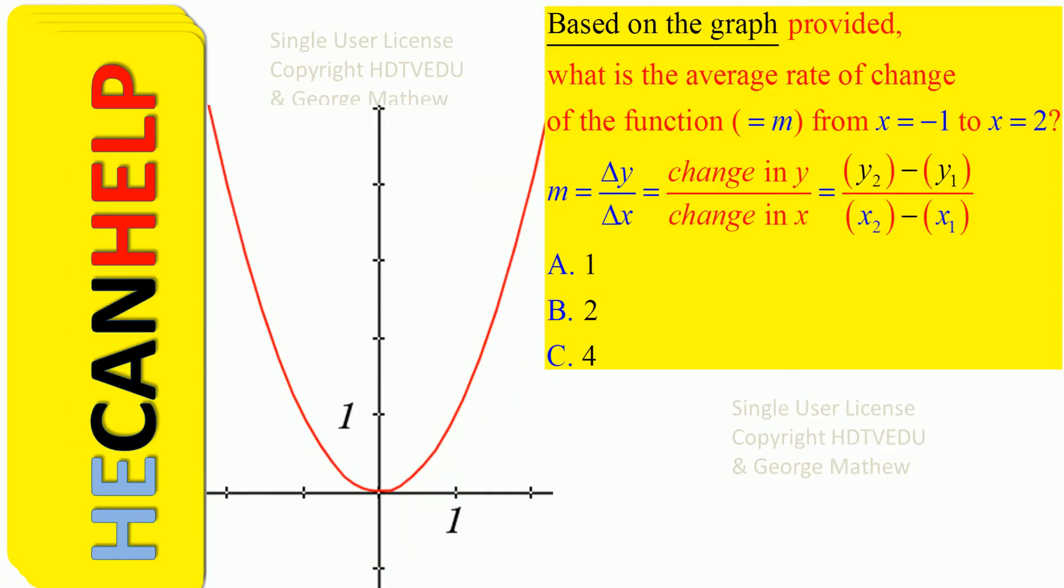Based on the graph provided, what is the average rate of change of the function, call it M, from x equal to negative 1 to x equal to positive 2? And you know that M is equal to change in y over change in x, y2 minus y1 over x2 minus x1. Is it A, 1, B, 2, C, 4?